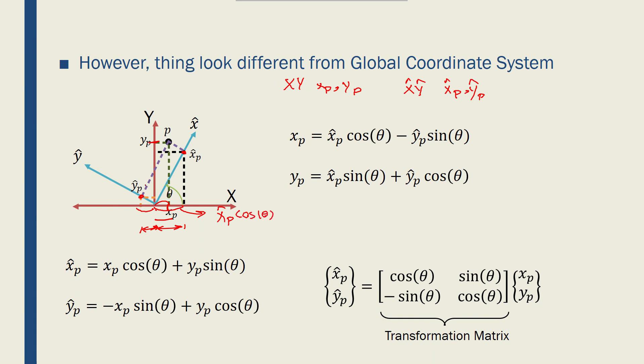And let me just say that this is also theta, the angle between the two coordinate systems. This distance would be yp, or y hat p, this location, which is this length, times sine theta.